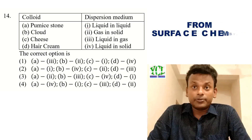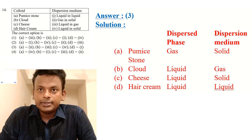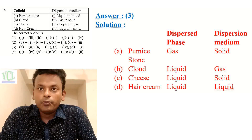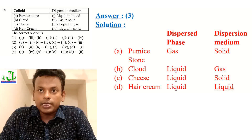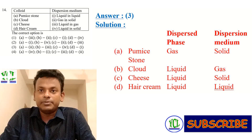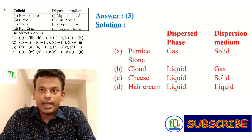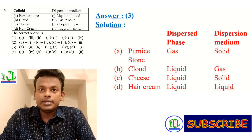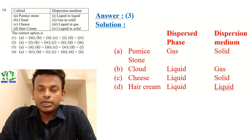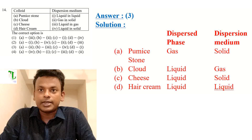Question 14: Colloid and dispersion medium — the correct option is 3. Pumice stone: dispersed phase is gas, dispersion medium is solid. Cloud: liquid dispersed in gas. Cheese: liquid dispersed in solid. And aerosol (air cream): liquid dispersed in liquid. So option 3 is the correct answer.